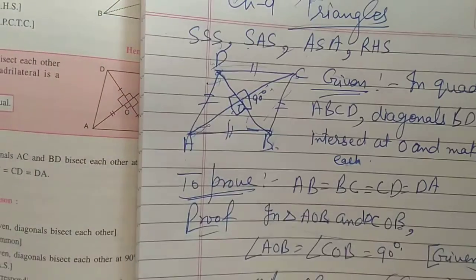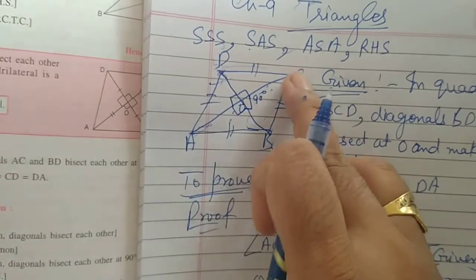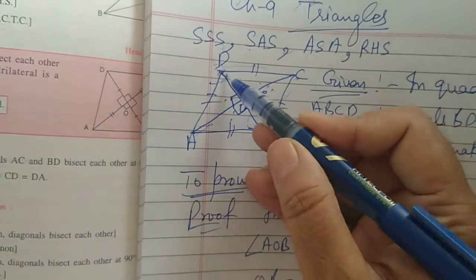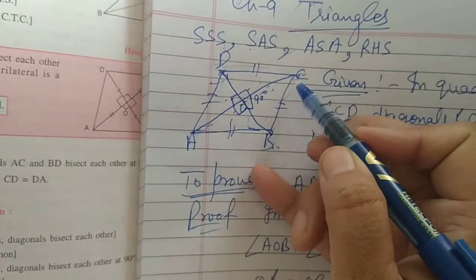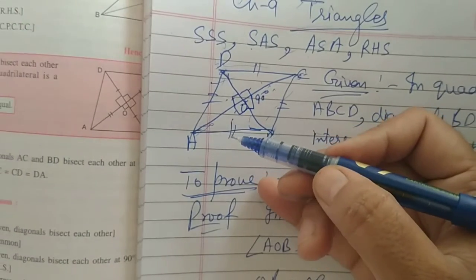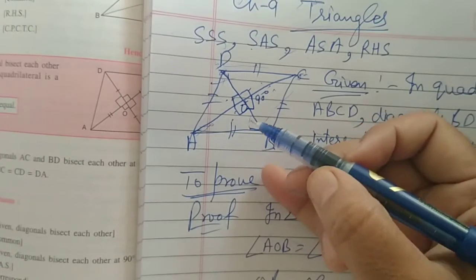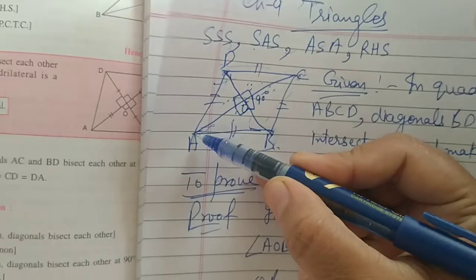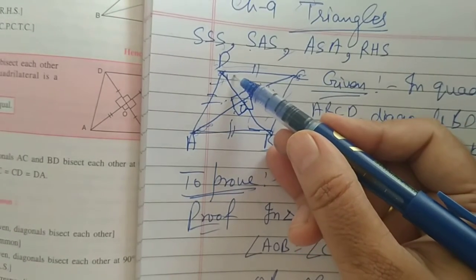So, similarly, we also prove triangle AOD and COD. In them there are 90-90 angles, OD is common, this is also given, diagonal is given that it bisects. So, again, by SAS condition, these two triangles will also be congruent. So, they are congruent, so their side, AD is equal to CD.